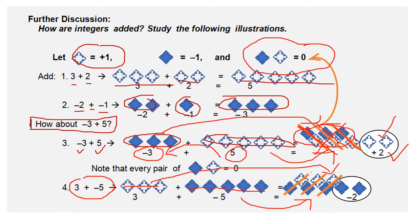Notice we can partner them in zero pairs, one, two, three. After we cancel the three that equal zero, we have two left, negative two, or we owe two pesos. It's like if we owe five pesos and we have three pesos, when we pay our debt, we have no money left, but at least our debt is reduced to just two pesos. That's how easy it is.